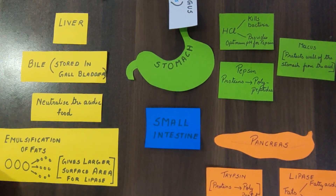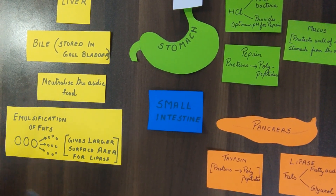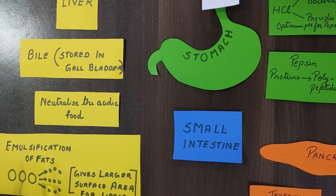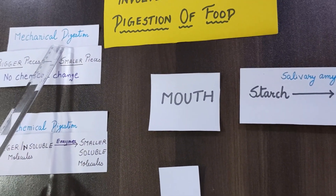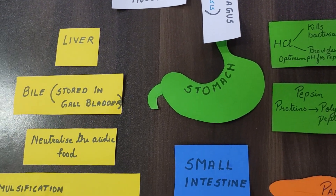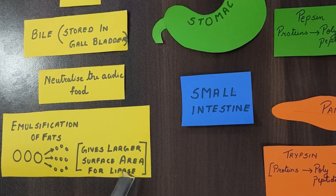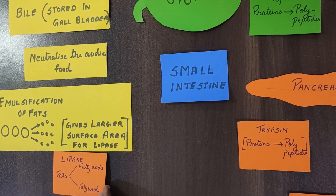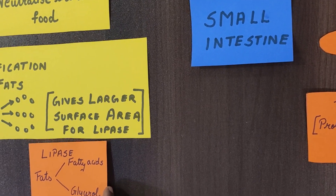The second function of bile is emulsification of fats. These big fat globules are converted into smaller globules — this is a mechanical digestion which happens in the small intestine because there is no chemical change. The benefit of emulsification is that it gives a larger surface area for lipase to act upon, and lipase then converts the fats to fatty acids and glycerol.